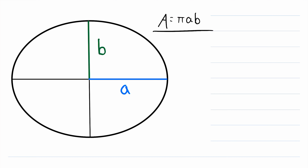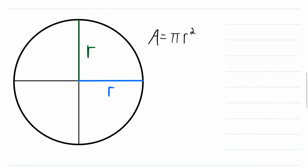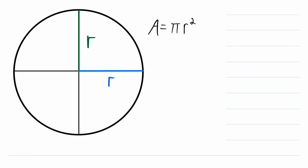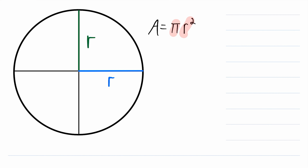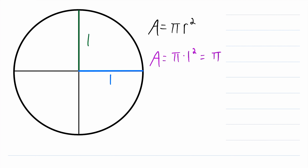But let's quickly get some sense of why this is the area of an ellipse. Consider a circle. What's the area of a circle? Well, you might remember that the area of a circle is pi r squared, where r is the radius of the circle. What's the area of the unit circle? Remember, the unit circle is the circle with a radius length of 1. Using our formula, we know that the area of the unit circle is pi times 1 squared, which is just equal to pi.